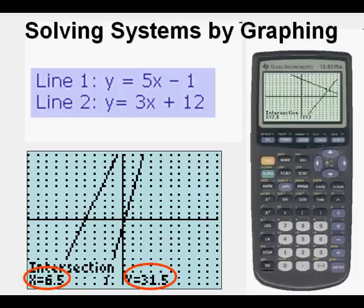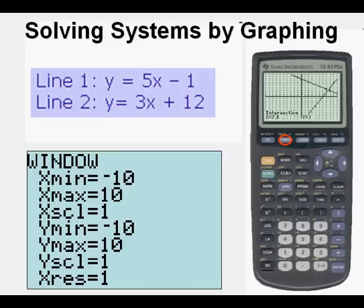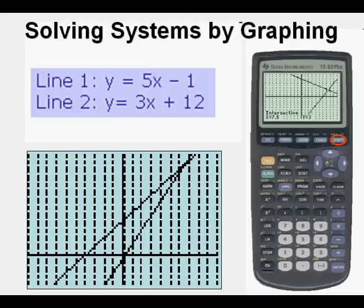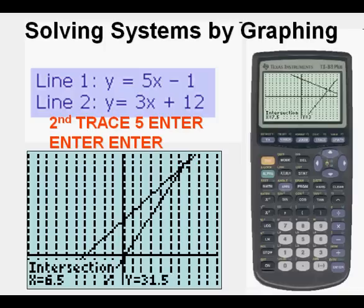And what we are going to do now is go to our window view and change the y max value to 35 in hopes of seeing the intersection point. And when we press graph from here, we do indeed see the intersection point upward in quadrant one. And we are going to find the solution again by pressing second, trace, 5, enter, enter, enter. It gives us the same solution.